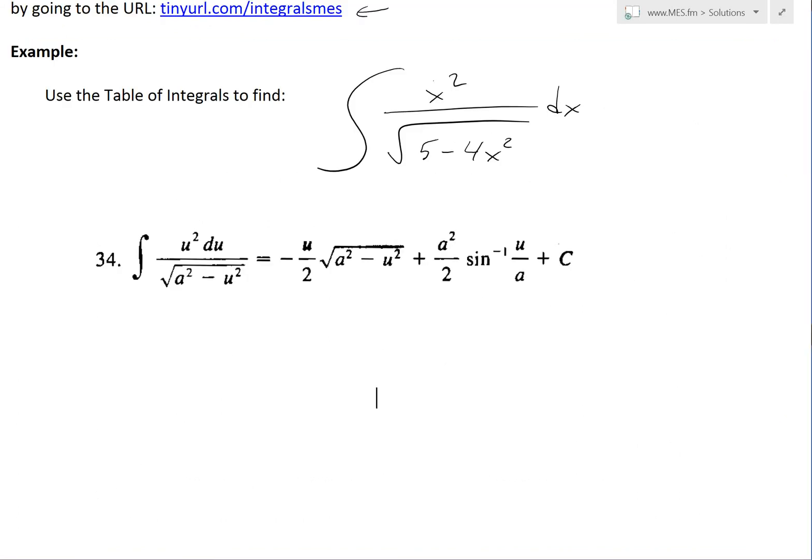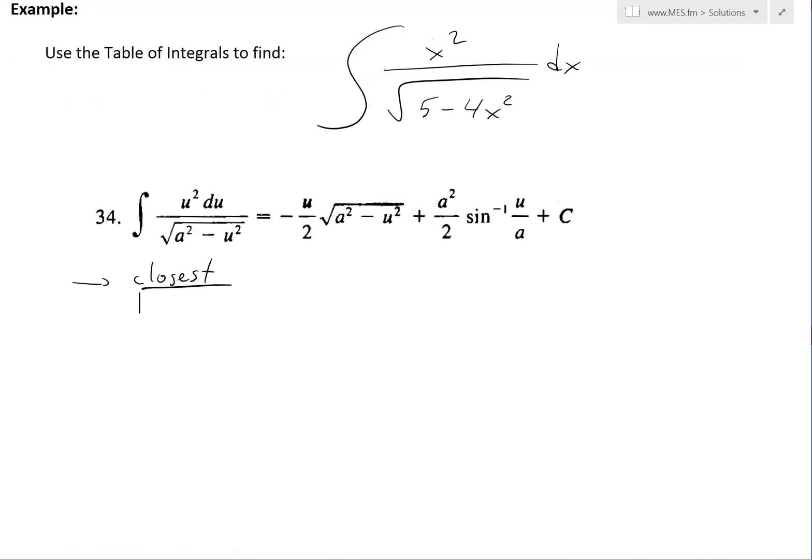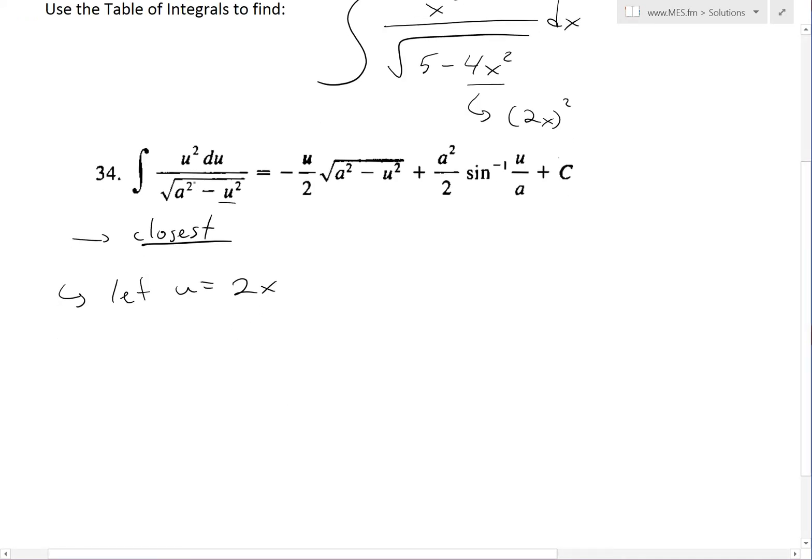So if I copy and paste this right here, this is the closest formula we have that looks like this one. But notice there's 4x squared and there's a u squared here. So we could use substitution because this basically equals 2x squared.